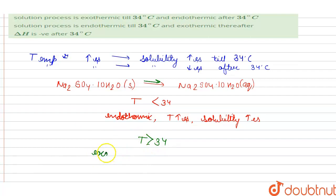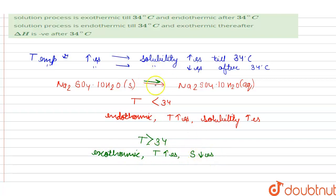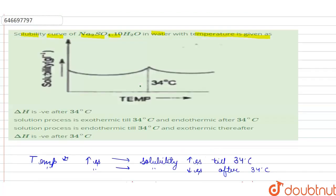The reaction becomes exothermic, so when we increase the temperature the solubility decreases because it favors the backward reaction since it becomes exothermic. Now if we see the options: